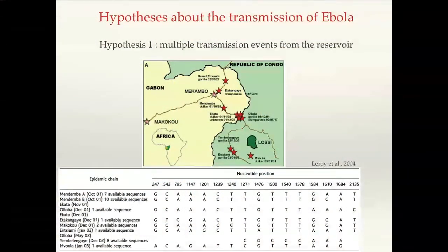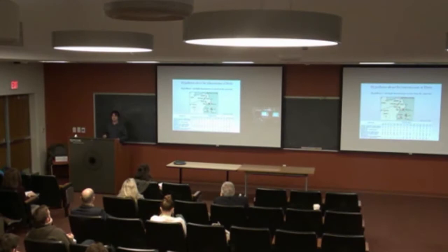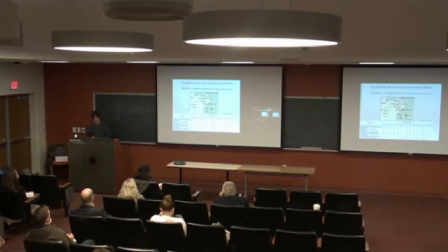This hypothesis was supported by observations during epidemic chains at the border between Gabon and Congo in the early 2000s, where several different types of viruses were found. The virologists argued that all these viruses were different and came from the reservoir, indicating multiple independent introductions into human populations. I will later argue that this may not be correct.